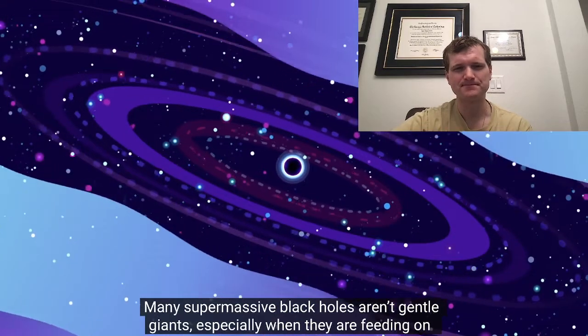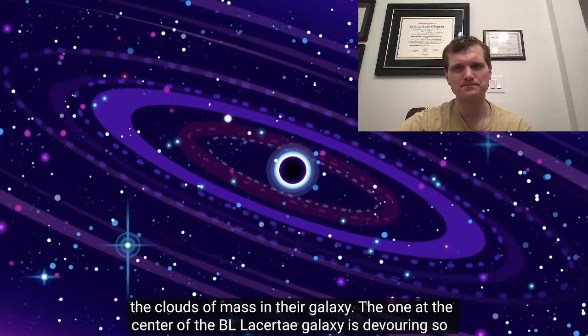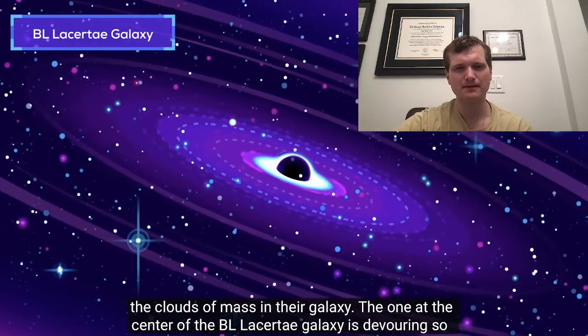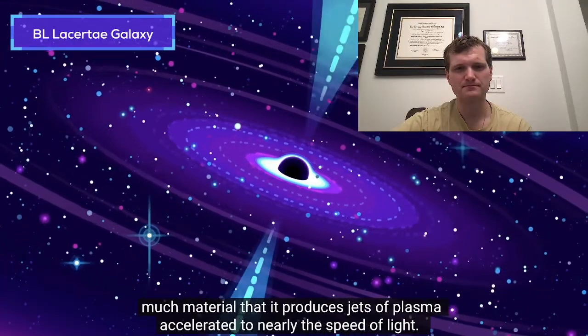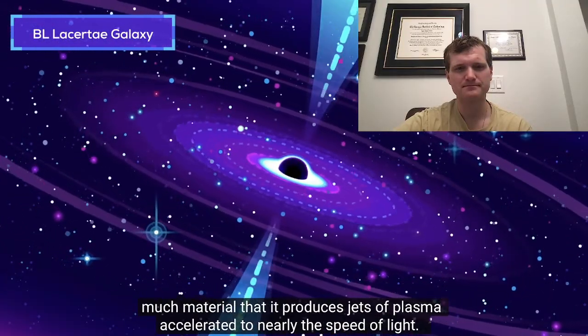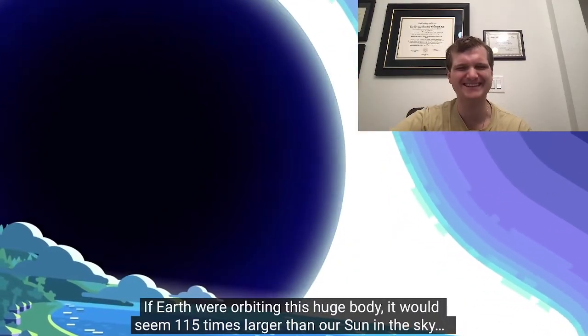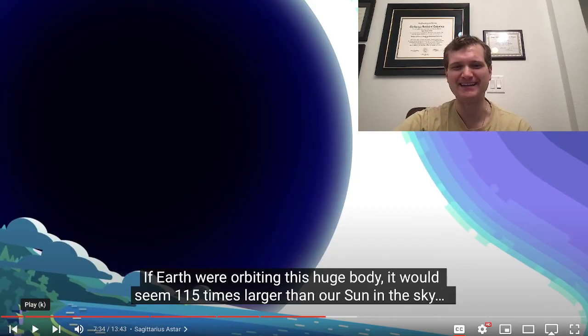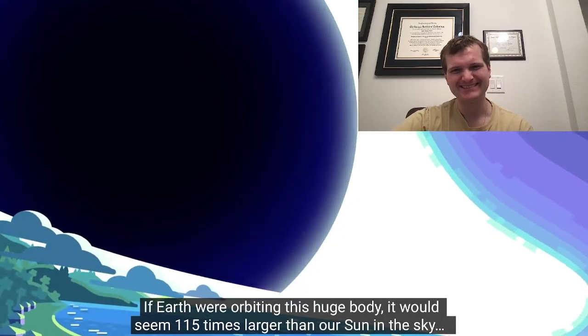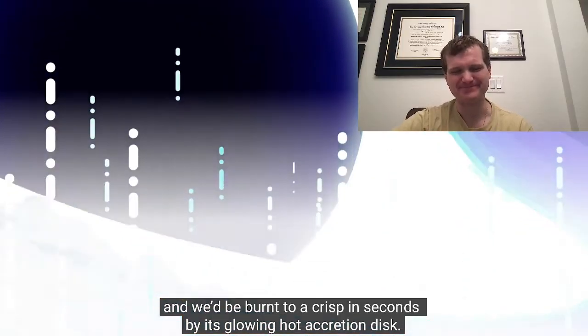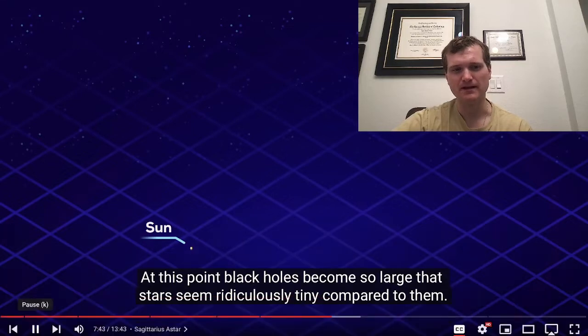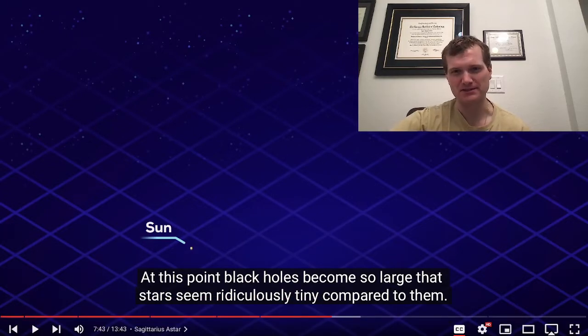Many supermassive black holes aren't gentle giants, especially when they're feeding on the clouds of mass in their galaxy. The one at the center of the BL Lacertae galaxy is devouring so much material that it produces jets of plasma accelerated to nearly the speed of light. That's so cool. If Earth were orbiting this huge body, it would seem 150 times larger than our sun in the sky, and we'd be burned to a crisp in seconds by its glowing hot accretion disk. At this point, I always loved the name black holes because the accretion disks, like it said, are many, many times brighter than the sun. So the term black hole... I guess if it didn't have anything to absorb, it would be truly black, and then you wouldn't be able to see it.